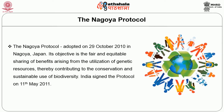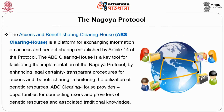India signed the Nagoya Protocol on 11th May 2011. Under this protocol, there is a platform for exchanging information called the Access and Benefit Sharing Clearinghouse — in short, the ABS Clearinghouse. It is established by Article 14 of the protocol. The ABS Clearinghouse is a key tool for facilitating the implementation of the Nagoya Protocol by enhancing legal certainty, transparency on procedures, and benefit sharing for monitoring the utilization of genetic resources along the value chain through the internationally recognized certificate of compliance. It also connects users and providers of genetic resources as well as associated traditional knowledge.